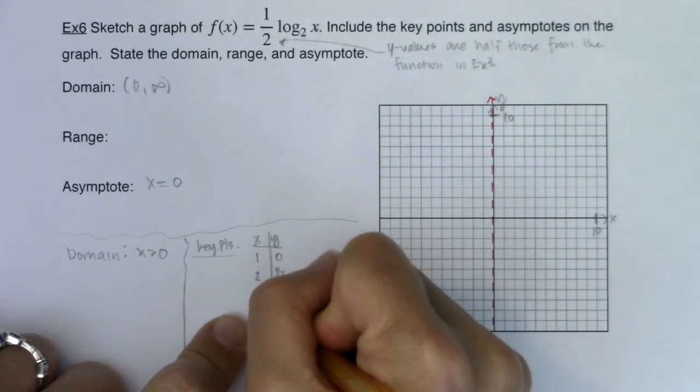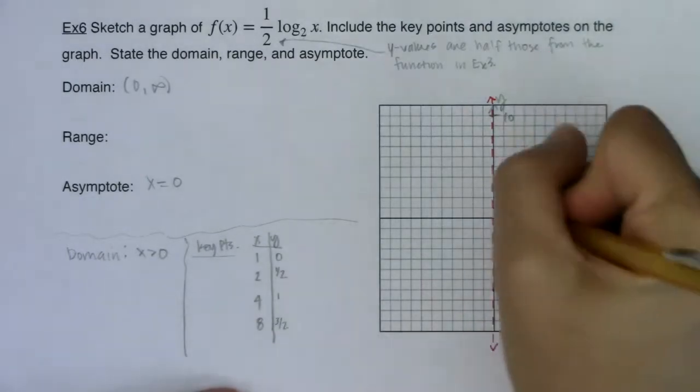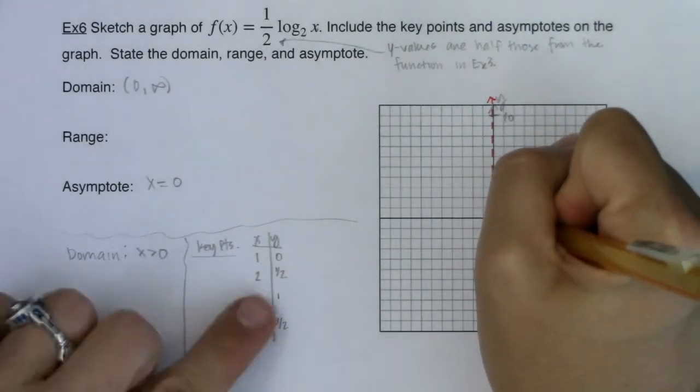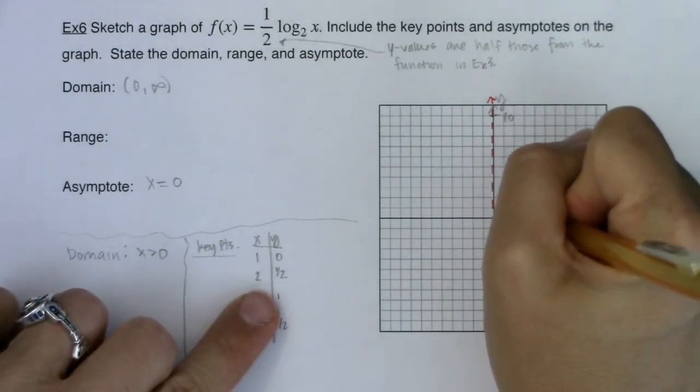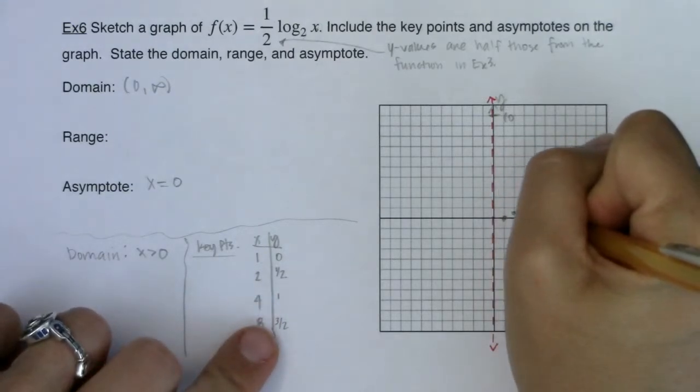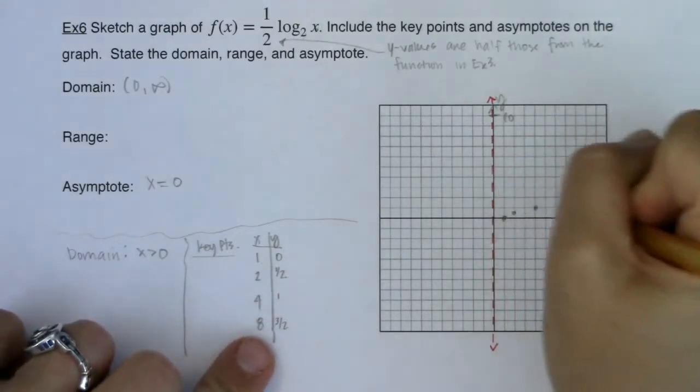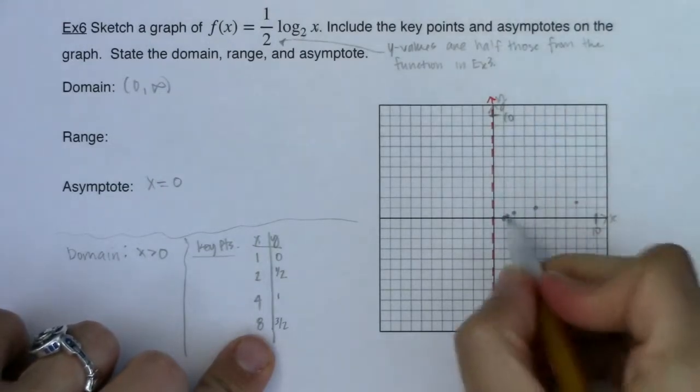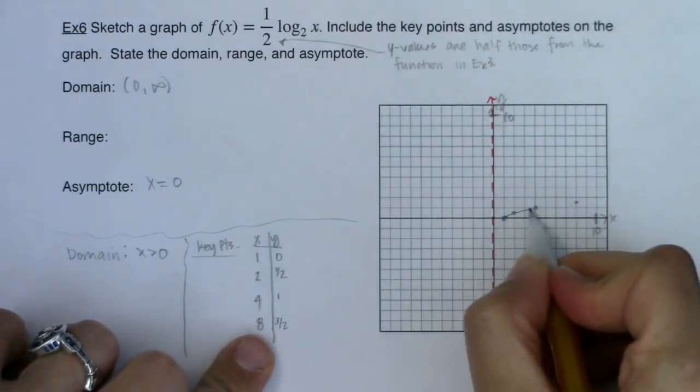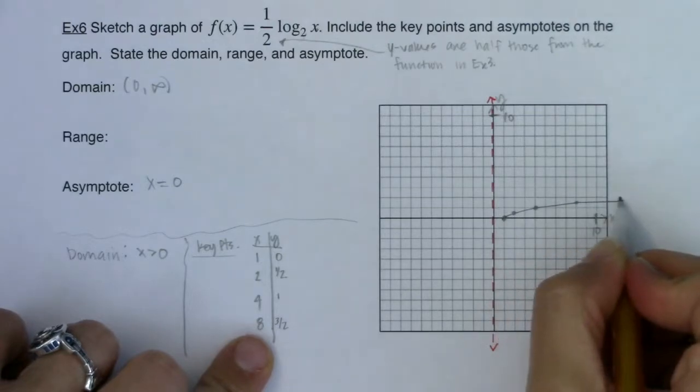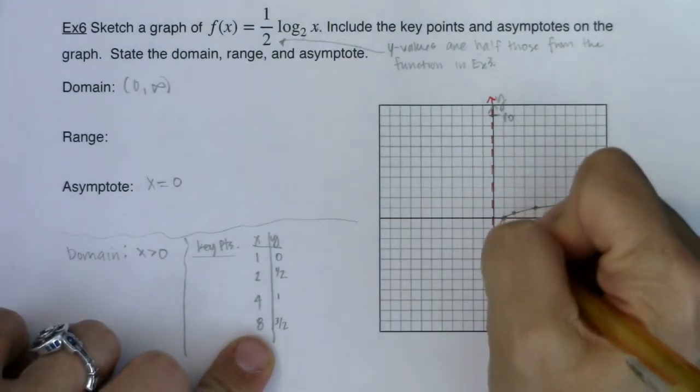So let's see what this is looking like. I've got 1, 0. I've got 2, 1 half. I've got 4, 1. And I've got 8, 3 and a half. So you can see how much more compressed this graph is as opposed to the graph in example 3.